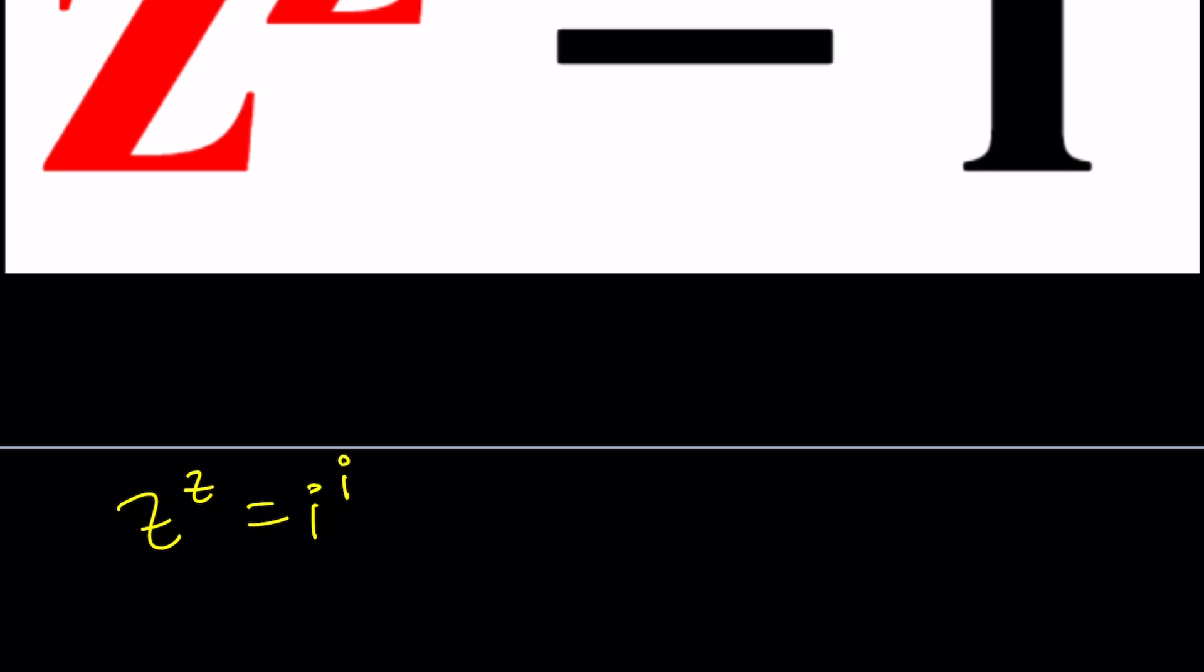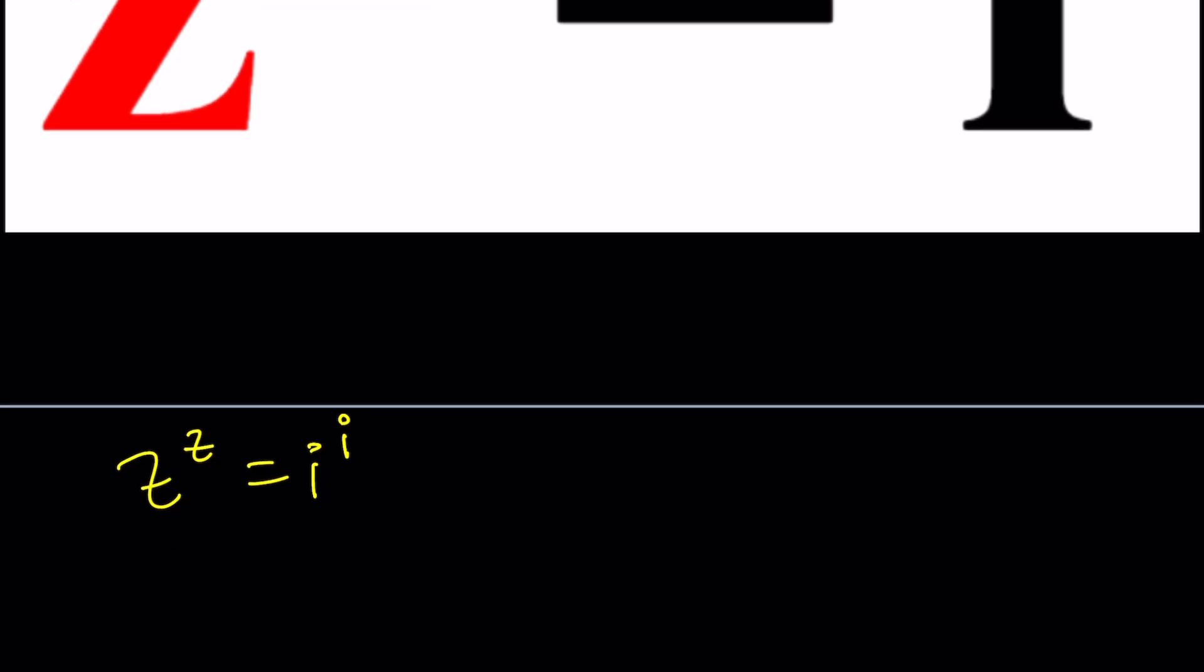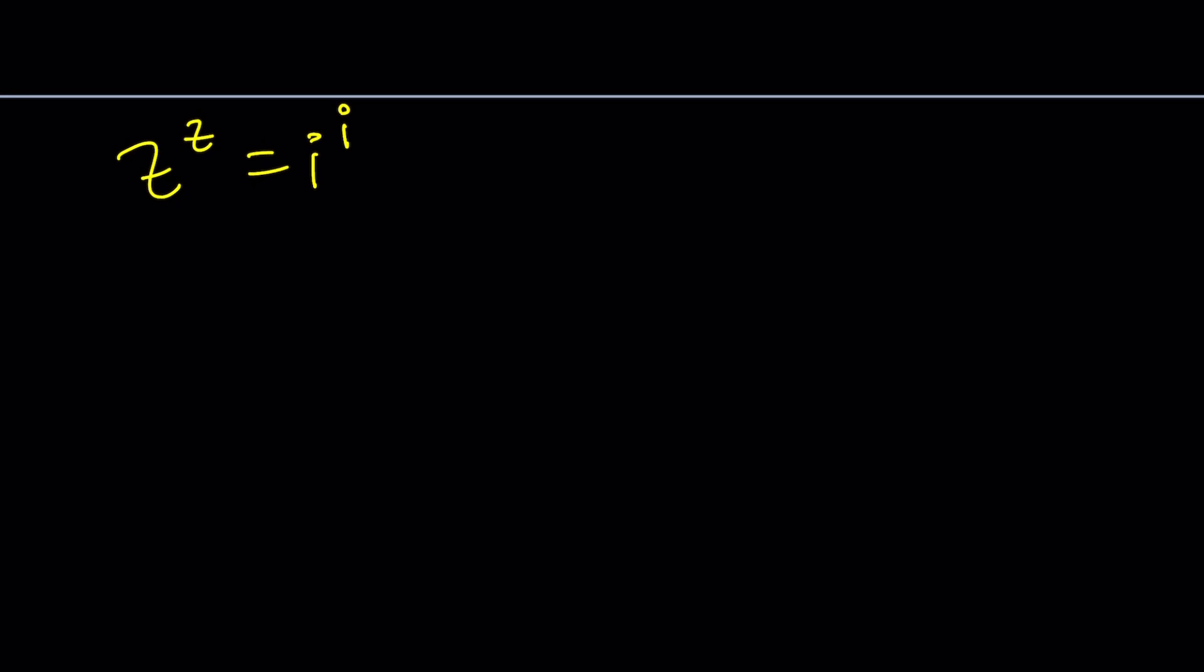I mean, what can z be so that this is satisfied? But that's only part of the picture. Anyways, let's go ahead and do this. I want to natural log both sides or write both of these as complex exponentials. By definition, this can be written as e to the power z ln z and this can be written as e to the power i ln i.